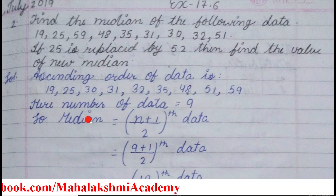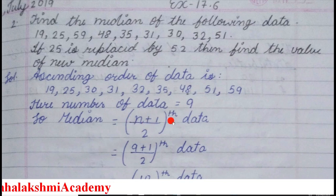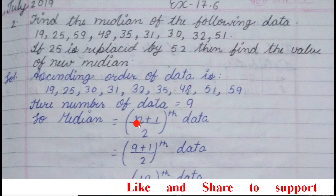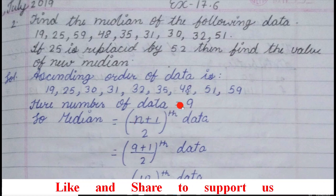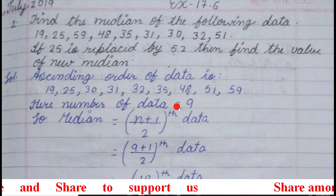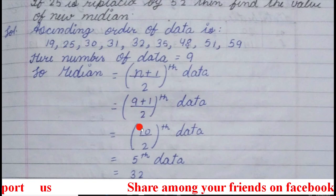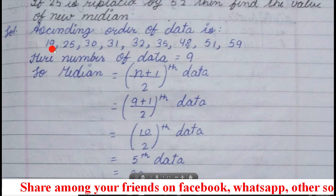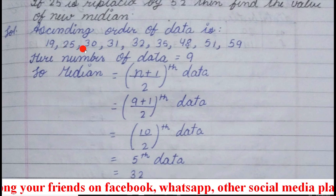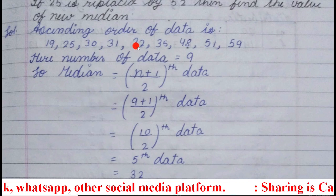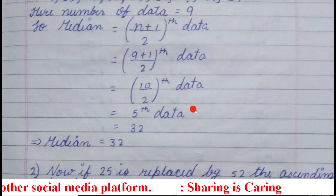For odd number of data, the formula is: Median = (n+1)/2 th data. Here n means number of data, so n = 9. So 9 plus 1 is 10, and 10 upon 2 is 5 — meaning the 5th data. So from the ascending order, we count: 1st, 2nd, 3rd, 4th, 5th. The 5th data is 32. So the median is 32.